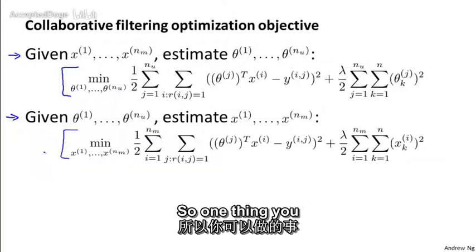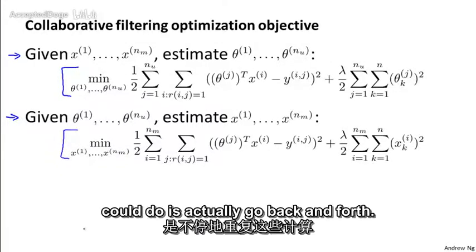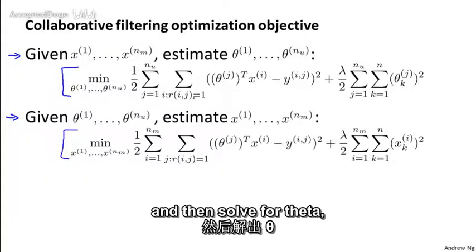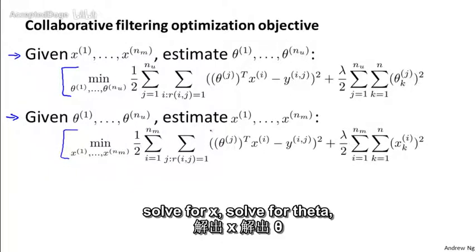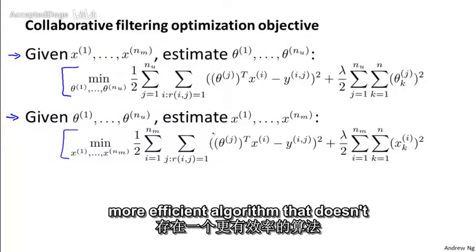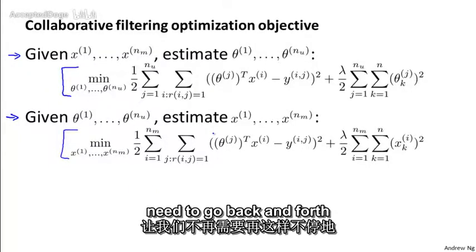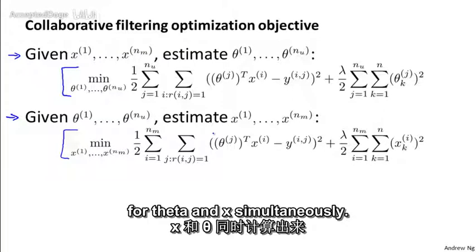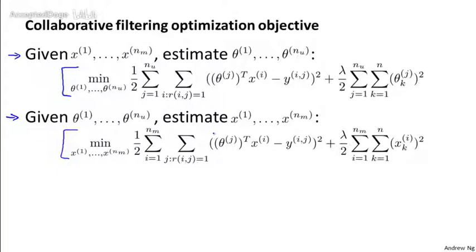One thing you could do is actually go back and forth — randomly initialize the parameters, then solve for theta, solve for x, solve for theta, solve for x. But it turns out there's a more efficient algorithm that doesn't need to go back and forth between the x's and the theta's, but can solve for theta and x simultaneously.